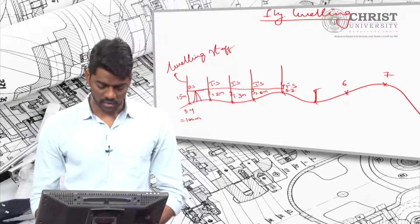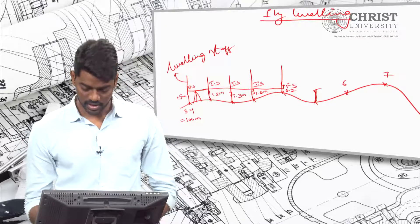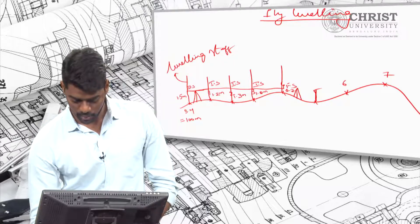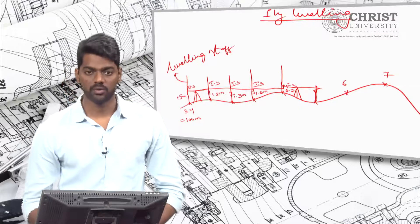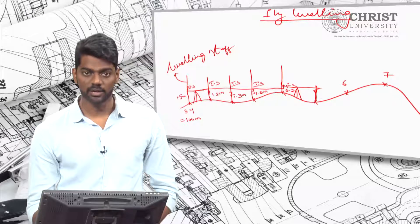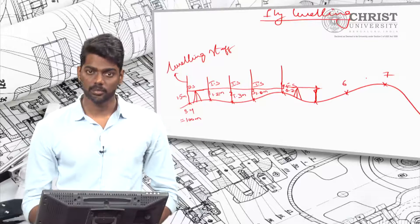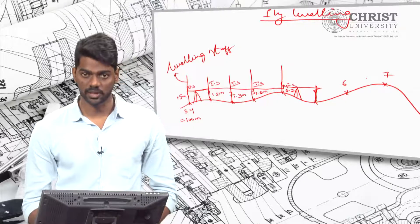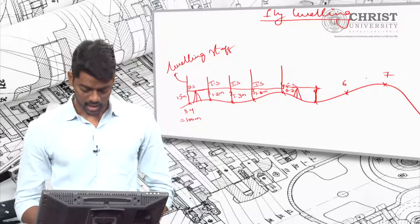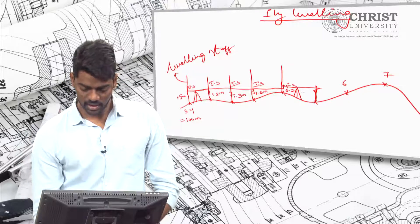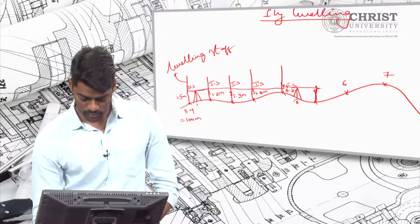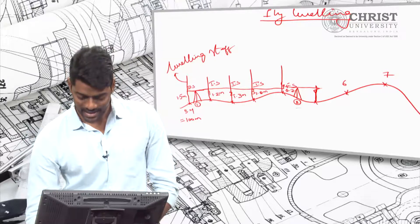Since we cannot see 0.5 from station 1, we have to shift our instrument from one place to another, in such a way that from the new position you can see the previous known point as well as the unknown point whose reduced level you need to find. This new instrument position is station 2. The point where we shift the instrument is called a change point.